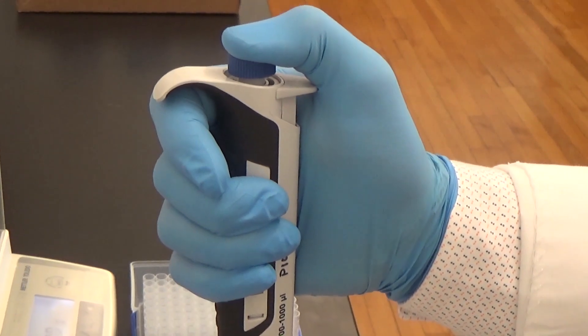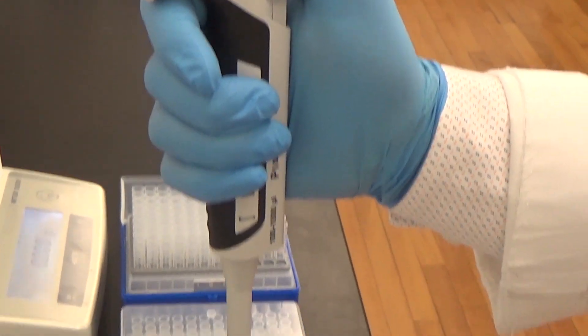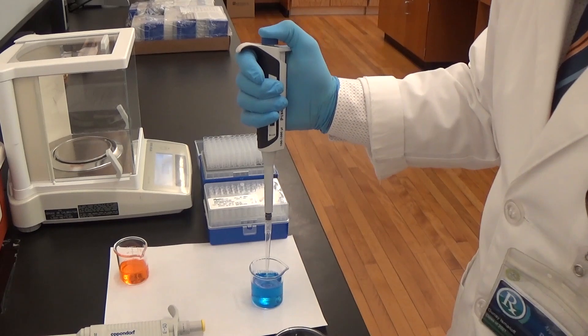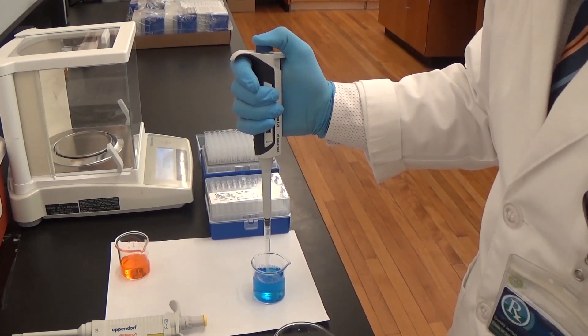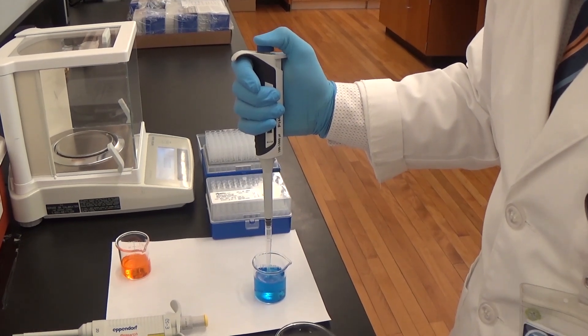Depress the plunger button to the first stop. Dip the tip just under the liquid surface about three millimeters to pre-rinse the tip for at least three times. And then slowly release the plunger button.